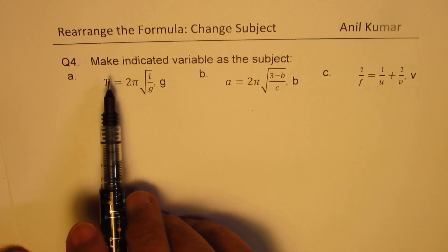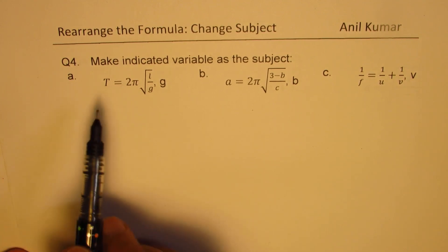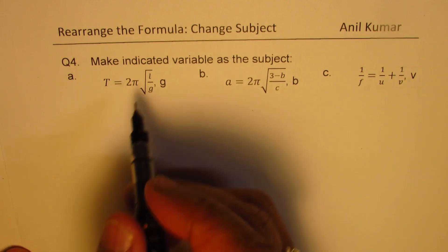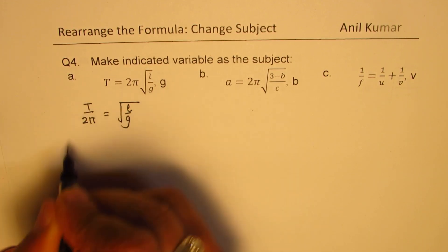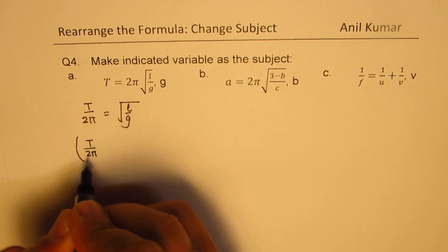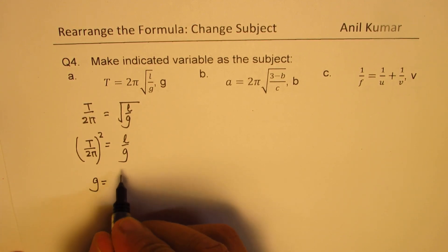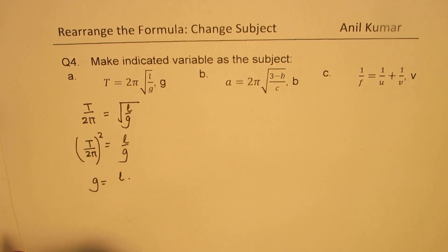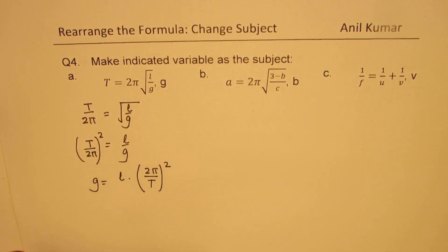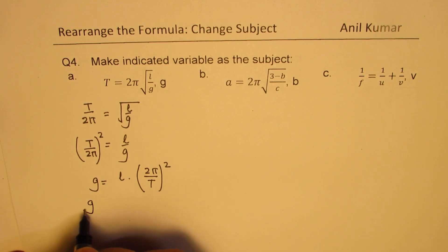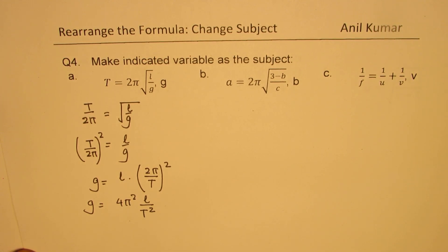Question number 4: make the indicated variable as a subject. For part A, we need to isolate G. T equals to 2 pi times square root of L over G. First divide by 2 pi: T over 2 pi equals to square root of L over G. Square both sides: (T over 2 pi) squared equals L over G. Cross multiply to get G: G equals to L times (2 pi over T) squared, which can also be written as 4 pi squared L over T squared.